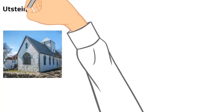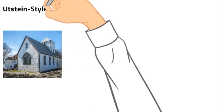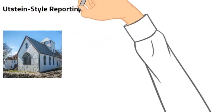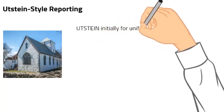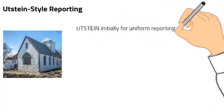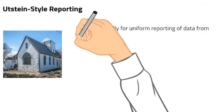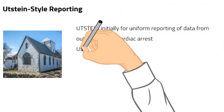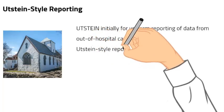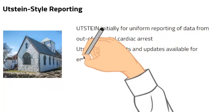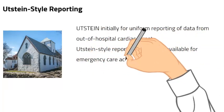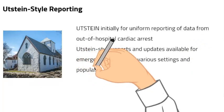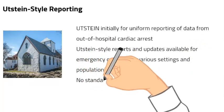What is Utstein? The first Utstein-style report arose from a 1990 conference held at the Utstein Abbey in Norway. This report focused on uniformly reporting data from out-of-hospital cardiac arrest. Since then, Utstein-style reports and updates have been published for emergency care across various settings and populations.